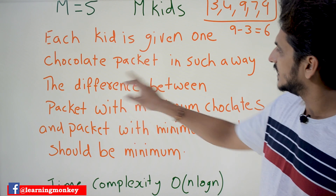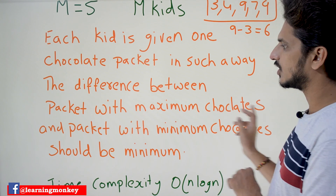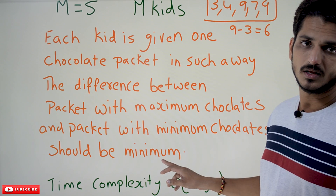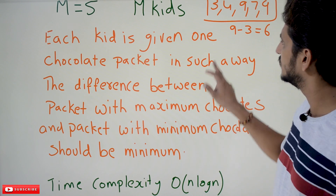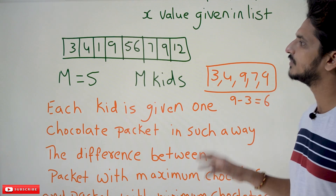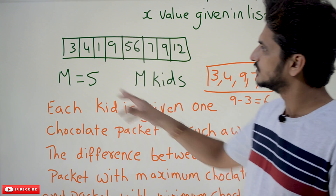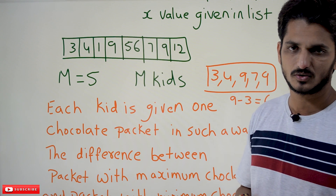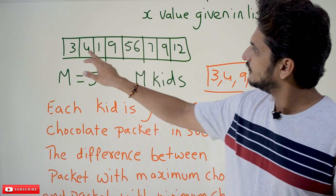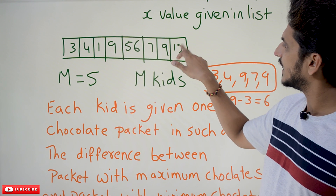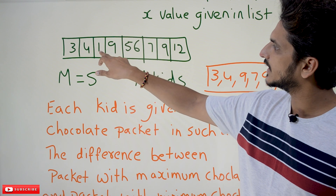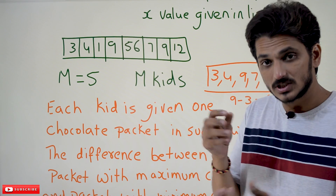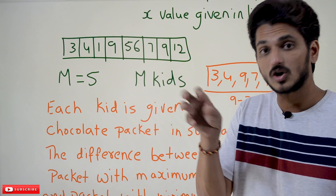Once again understand: the difference between the packet with maximum chocolates and the packet with minimum chocolates should be minimum. This is how we have to distribute the chocolates. To understand with numbers: let's take first, second, third, fourth, and last packet provided to the kids as 3, 4, 1, 9, and 12. The maximum packet is 12, minimum is 1. 12 minus 1 equals 11. This is one combination.